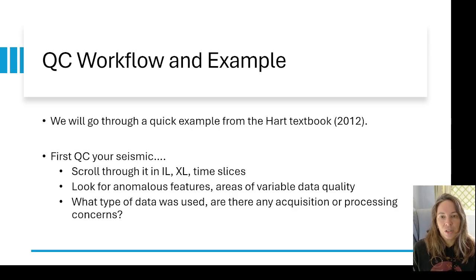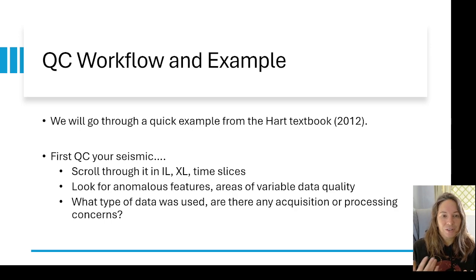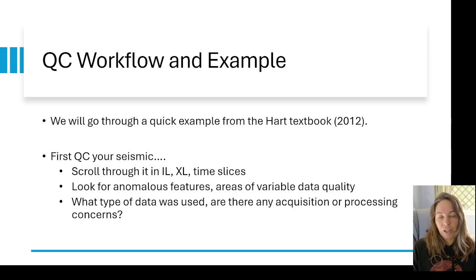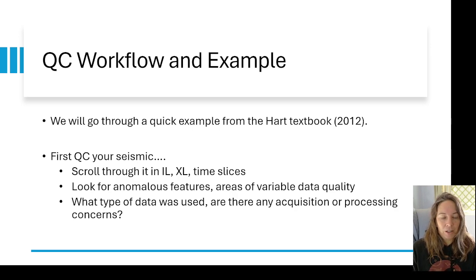Often when you're doing these quality controls you can also start to pay attention for any anomalous features or areas where the data quality changes, or maybe some geologic features you want to pay attention to. That'll help you understand if there's any acquisition or processing concerns. What I do is as soon as I load the data I run some sort of coherence or variance attribute — I'll talk about those later — because that's another key way to look at the seismic data to help you QC. So I'll do QC work right away on the seismic amplitude data and then some sort of coherence/variance/similarity type QC.